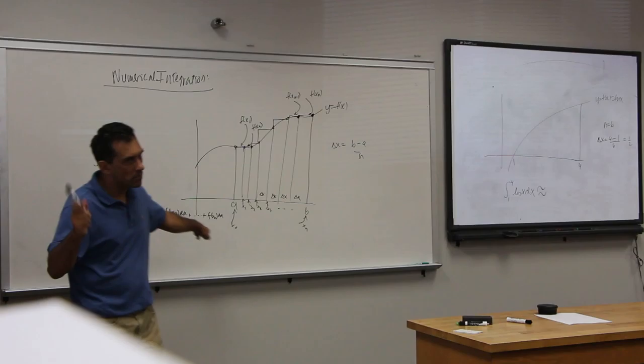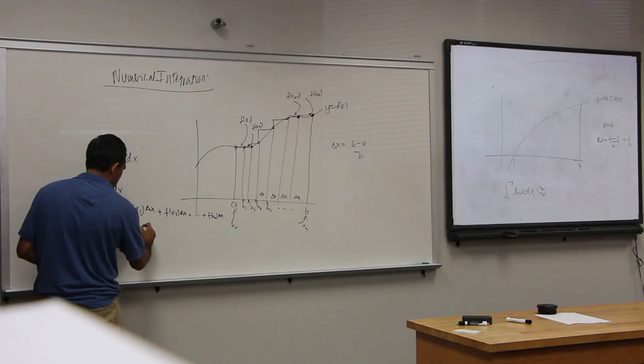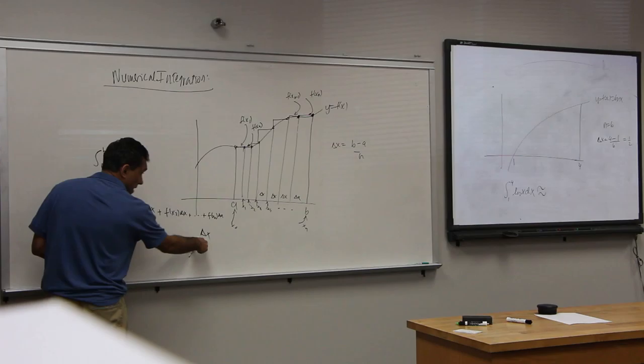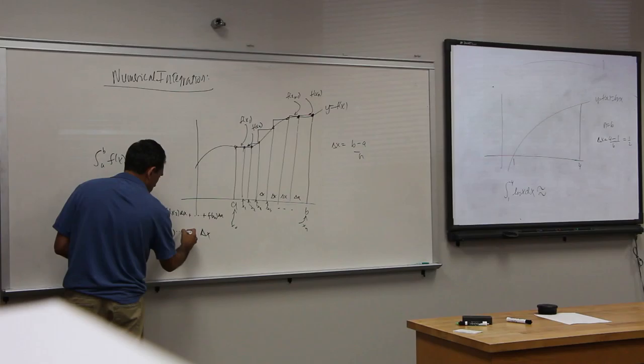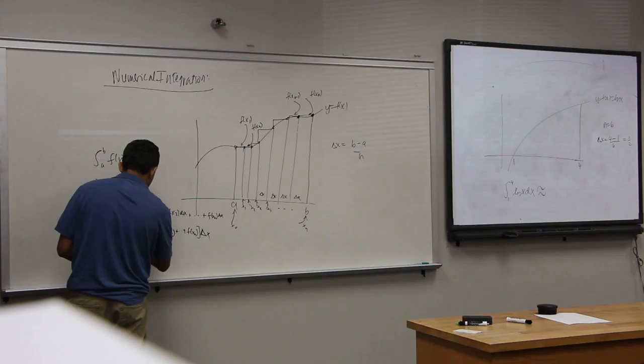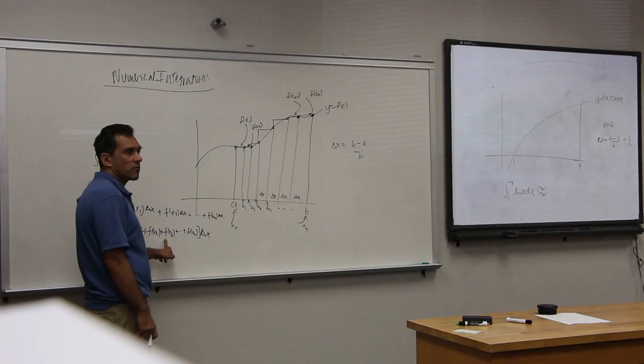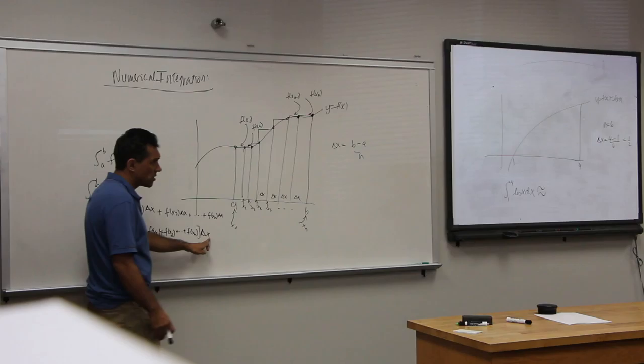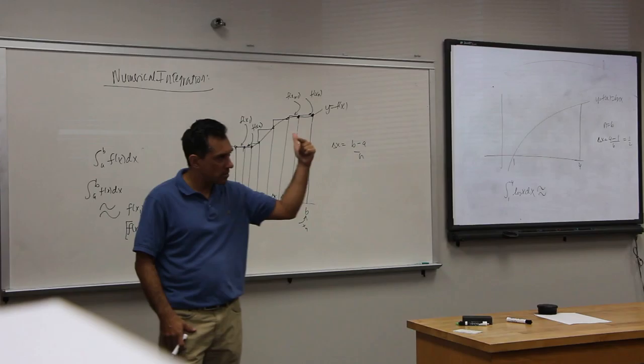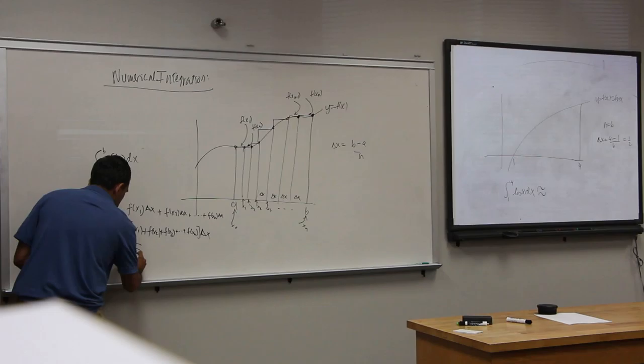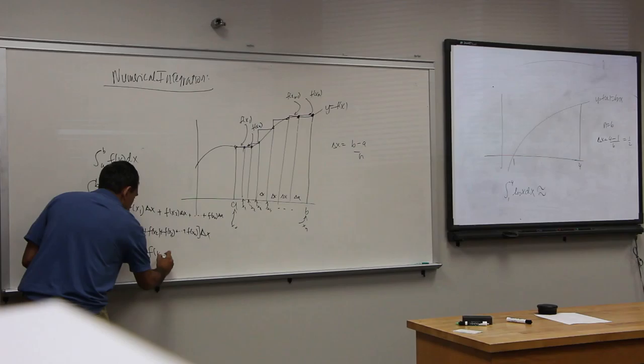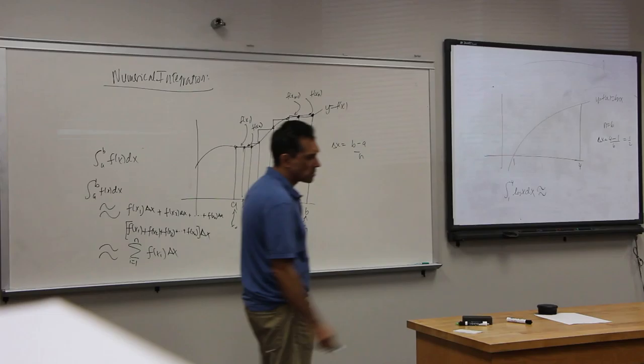You will notice that delta x is a common factor. It is multiplying f of 1. I'm going to take it out. f of x1 times delta x. Plus f of x2 times delta x. Plus f of x3 times delta x. All the way up here. Take the delta x multiplied by f of x2. Take the delta x multiplied by f of x3. And add them all up. This is a little easier to compute. Rather than multiplying each of them by delta x. Add them all up. And then multiply by delta x. If you write this in sigma notation. That's an approximation.